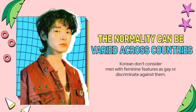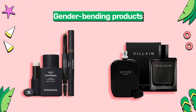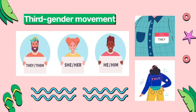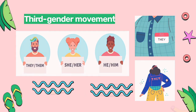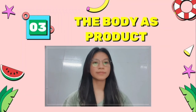Androgyny means a person's orientation isn't as clearly defined as just male or female. The norms around sex-typed behaviors can differ across countries — for example, Koreans don't consider men with feminine features as gay or discriminate against them. People are now more open to androgyny, especially young consumers. Some male and female celebrities engage in gender bending. Products like makeup and perfume have long been for women, but now many brands are including men in the target market. Finally, regarding the LGBTQ+ community: people in this community now appear frequently in TV shows, music videos, and advertisements. There are also 'third gender' movements that include more sex options on official papers, such as genderqueer or unspecified. Sexuality is seen as more of a continuum rather than a dichotomy, and gender binarism is giving way to gender benders.